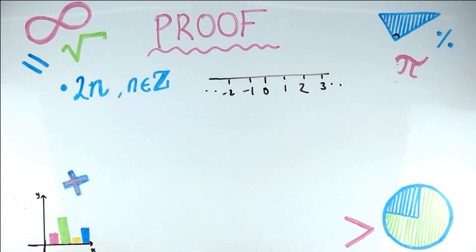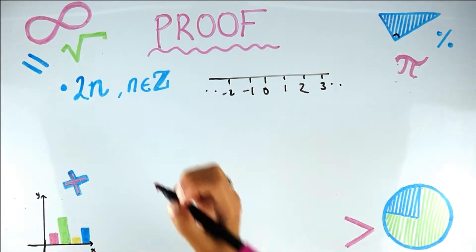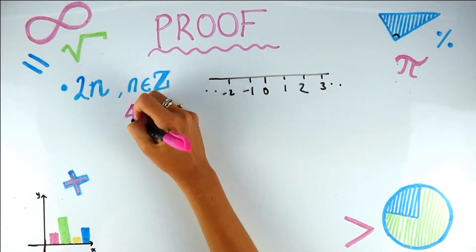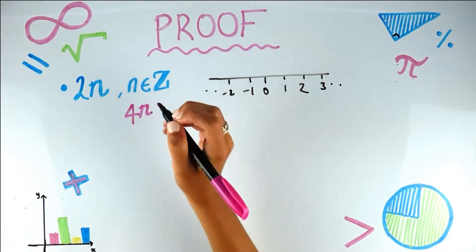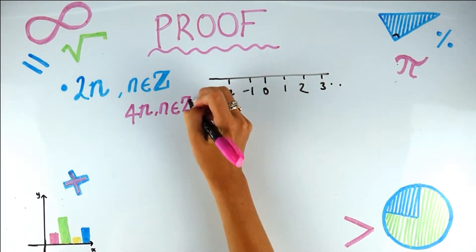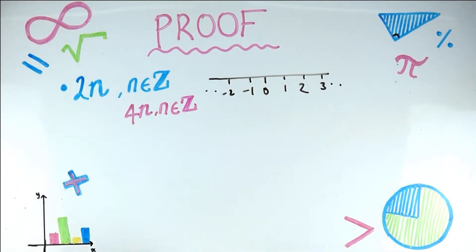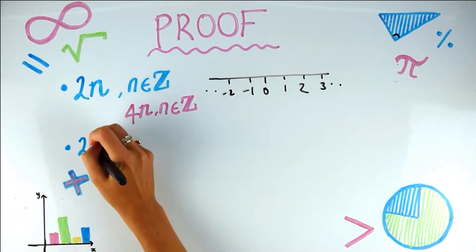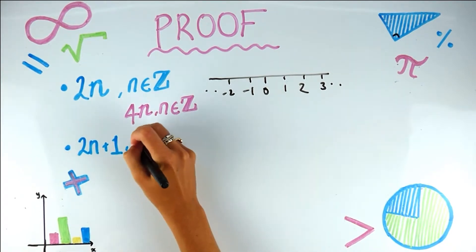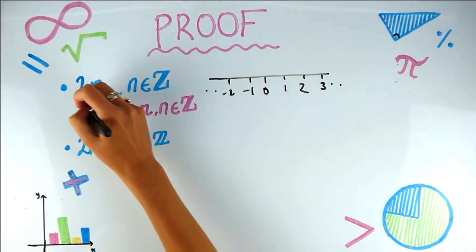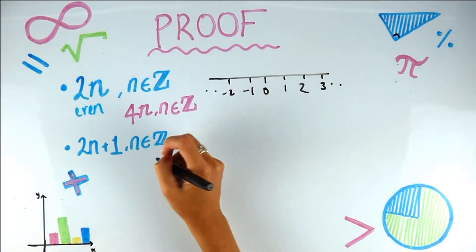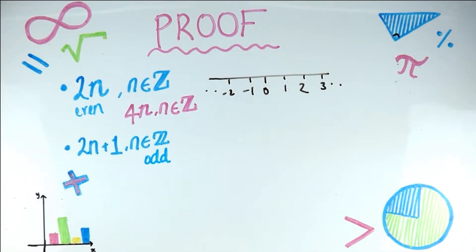So that is how you write an even number. If you wanted a multiple of 3 or 4, any multiple of 4 can be written as 4 times n, where n is an integer. Another important fact: 2n + 1, where n is an integer, is a way you can write any odd number.